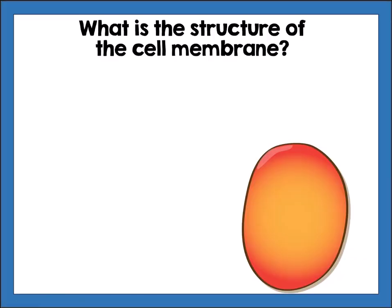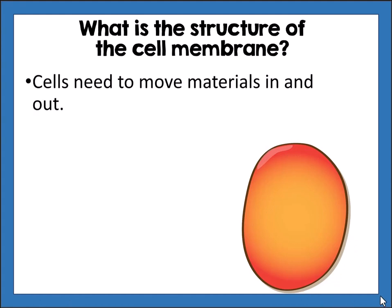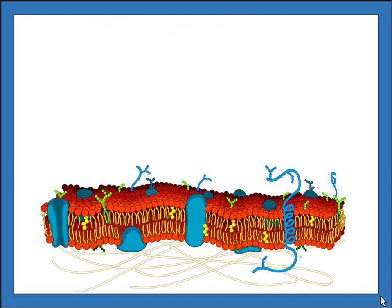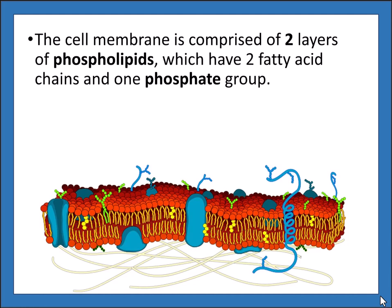Now that you know what the cell membrane is and where it's located, let's talk about its structure. Cells need to move materials in and out — food and nutrients come in, waste leaves, gases and water are constantly exchanged. The cell membrane is comprised of two layers of phospholipids, which have two fatty acid chains and one phosphate group. All eukaryotic and prokaryotic cells have a cell membrane.